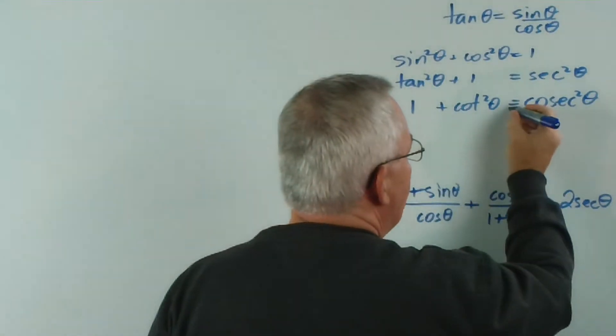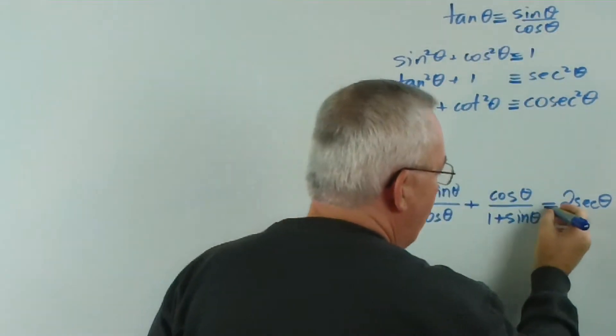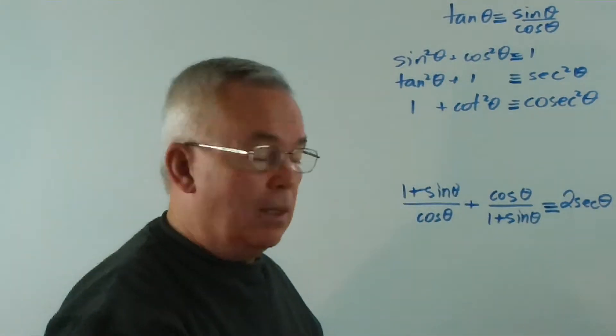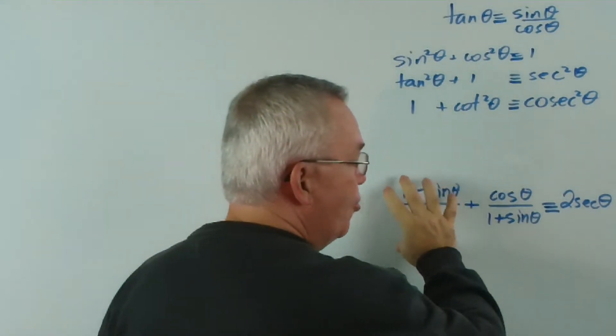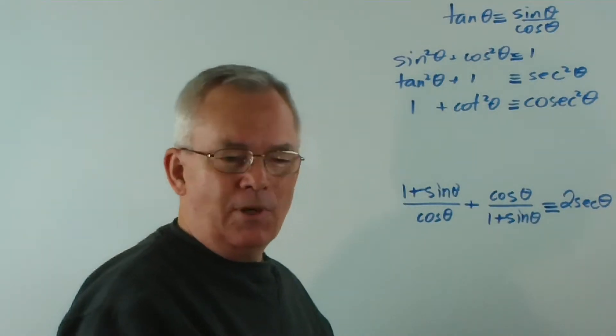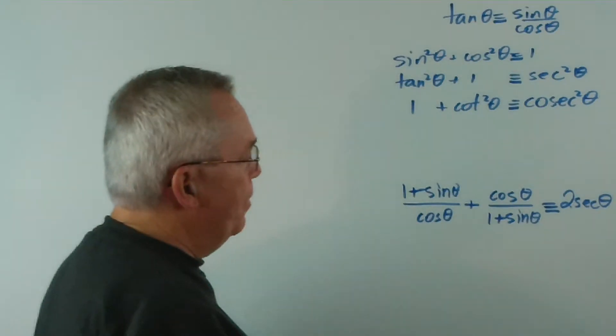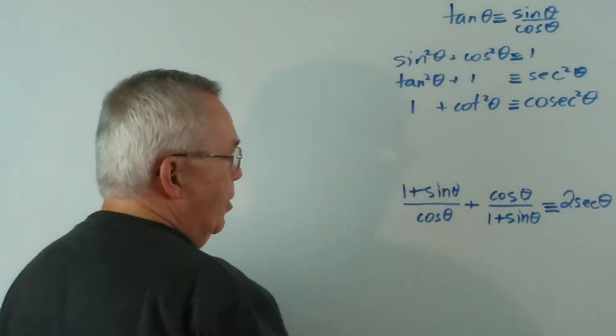And being identities, we should really write that. And we are in fact writing this identity. And identity of course means that this is true for every possible value of theta. We're not just solving to find a particular value that makes it work, as we would in an equation.